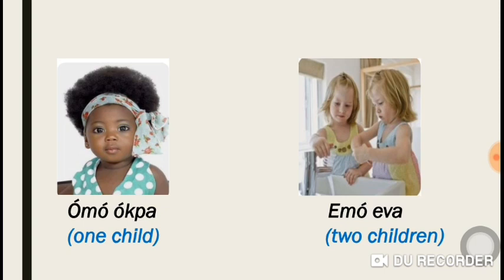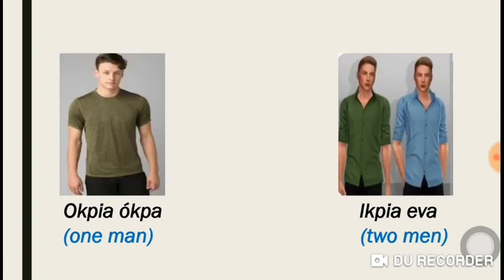Now, let's take some examples of Singular and Plural. The Plural is Emo iwa — Two Children. Omo kba means One Man. The Plural is Emo iwa — Two Children.